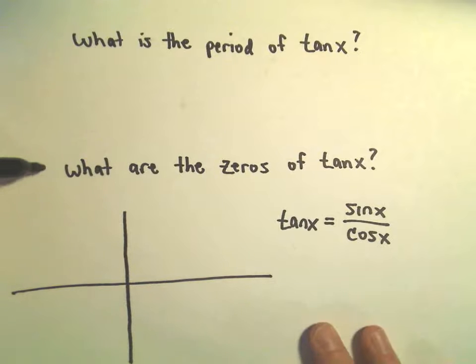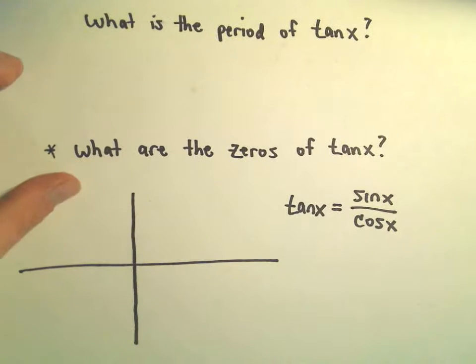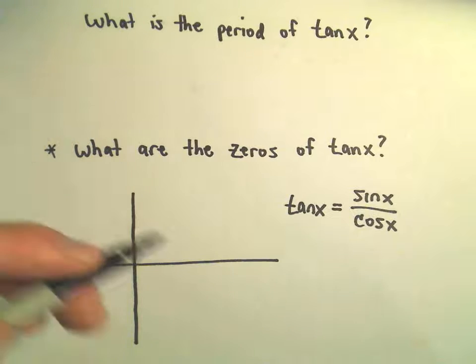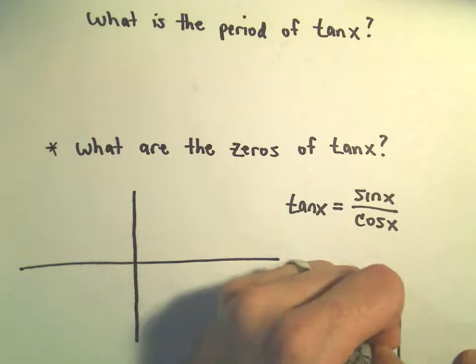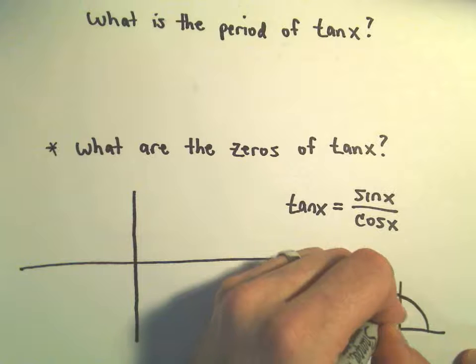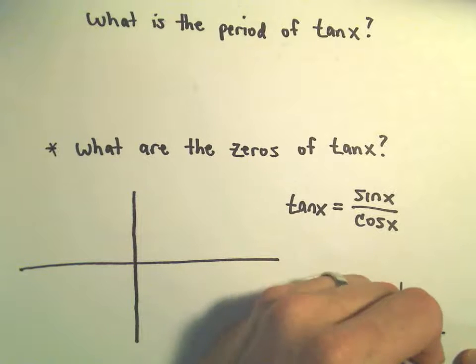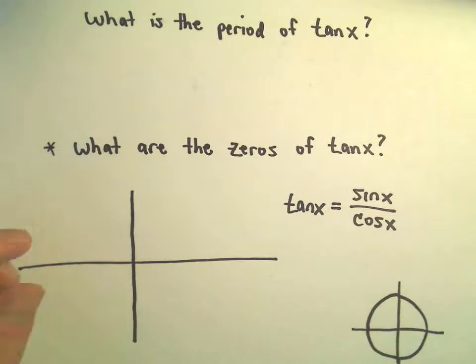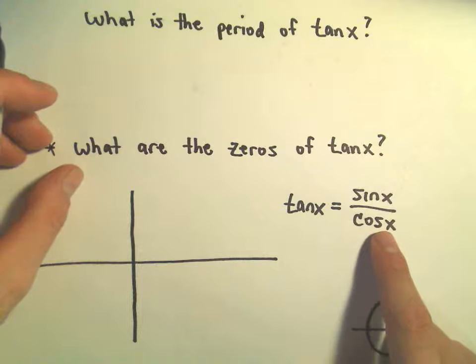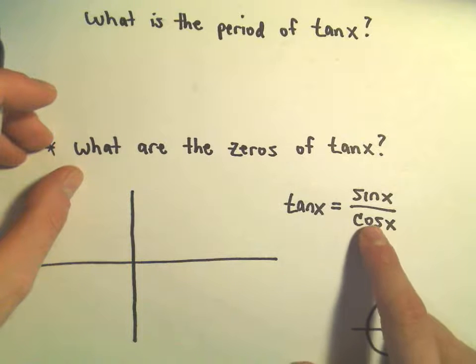Maybe we can answer the second question first. We want to figure out the zeros of tangent x. I go back to the unit circle. I'm always thinking about this circle and the definitions of sine and cosine. Anywhere cosine of x equals 0, we would get something over 0, which would be undefined.